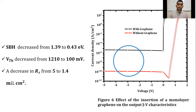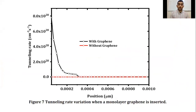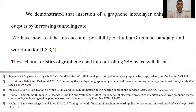However, an increase in leakage current was observed, as presented in figure 6. These variations are related to an increase in tunneling rate, as presented in figure 7. We demonstrated that insertion of a graphene monolayer enhances Schottky barrier diode outputs by increasing tunneling rate. We have now to take into account the possibility of tuning graphene bandgap and work function. These characteristics of graphene can be used for controlling Schottky barrier height, as we will discuss.